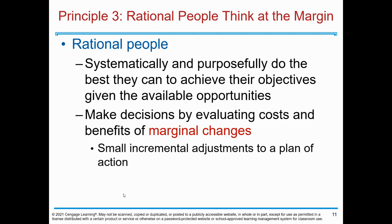Principle three: rational people think at the margin. Rational people systematically and purposefully do the best they can to achieve their objectives, given the available opportunities. They make decisions by evaluating costs and benefits of marginal changes. Marginal changes are the small incremental adjustments to a plan of action.